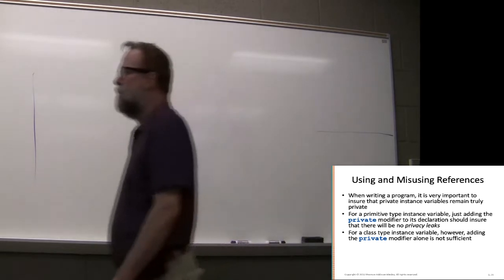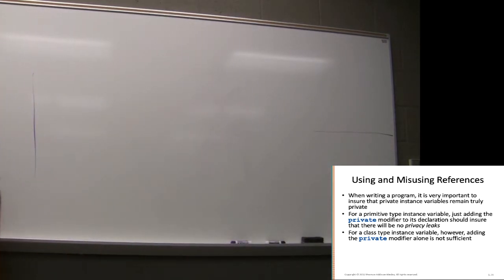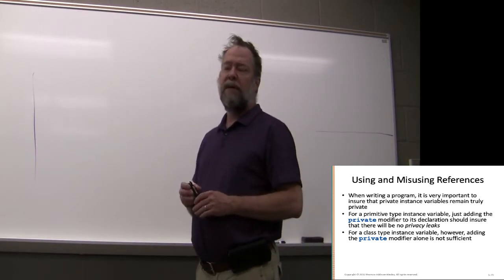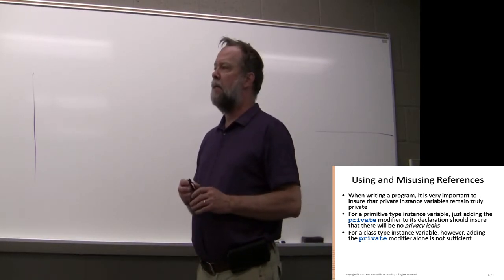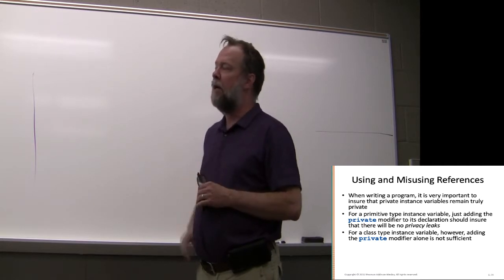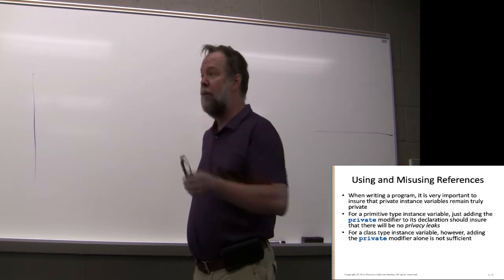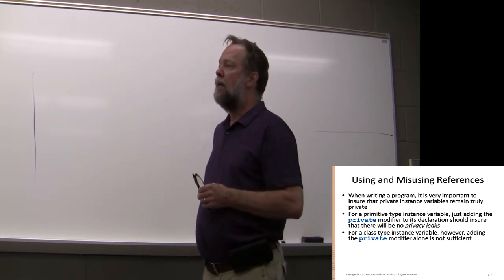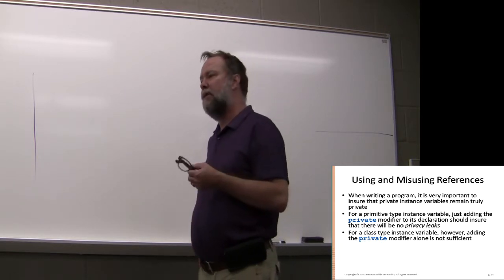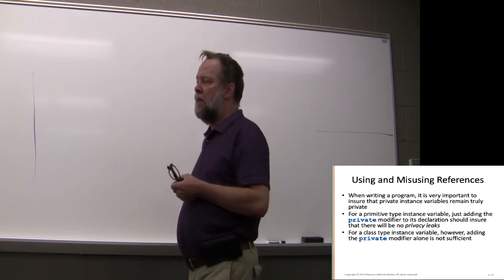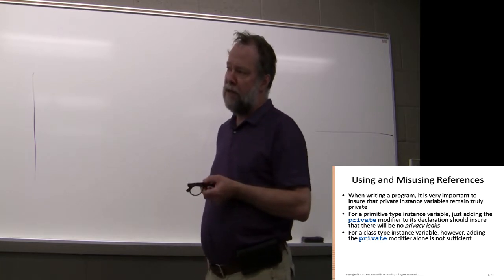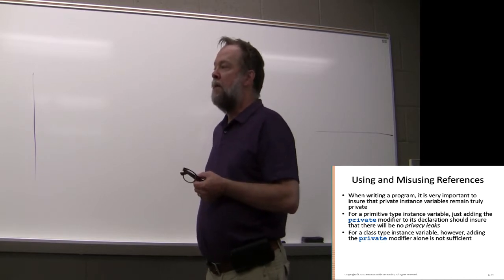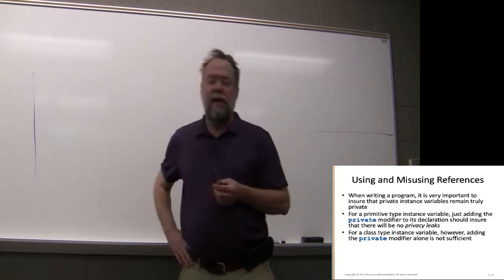Today we're going to cover section 5.3 in the textbook, which is a continuation of the discussion of references and pointers from the previous lecture in section 5.2. We'll be covering copy constructors, privacy leaks, how to create a good copy constructor, and how to make good accessor functions.